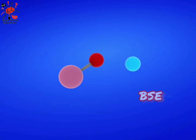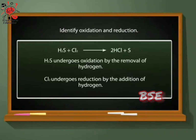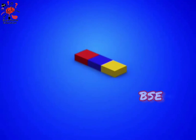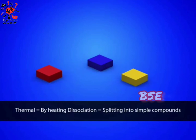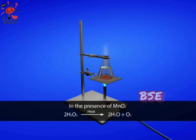Zinc oxide undergoes reduction by losing oxygen to become zinc, and carbon undergoes oxidation by gaining oxygen to become carbon monoxide. When a compound is dissociated into simple compounds on heating, this is called thermal dissociation. Hydrogen peroxide dissociates on heating to give water and oxygen in the presence of manganese oxide.